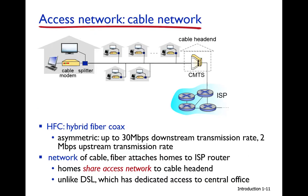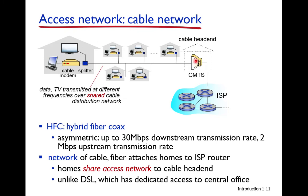The cable network has a CMTS (Cable Modem Termination System). Its functionality is similar to the DSL Access Multiplexer — when it receives data, if it is internet data it is forwarded to the internet. The splitter determines whether incoming data is TV data, forwarding it to the TV, or internet data, forwarding it to the cable modem.